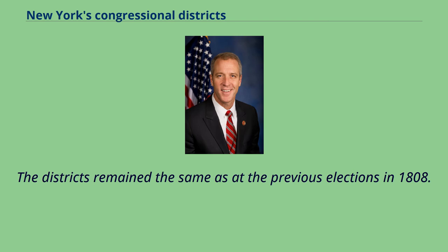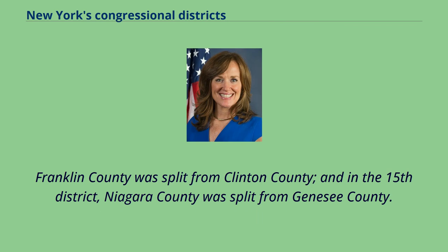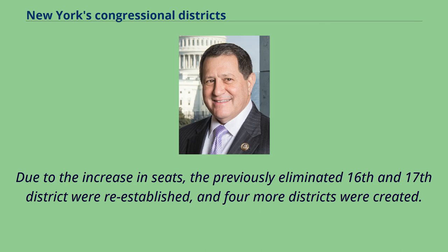The districts remained the same as at the previous elections in 1808. Only four new counties were created inside some districts: in the 5th district, Sullivan County was split from Ulster County; in the 7th district, Schenectady County was split from Albany County; in the 8th district, Franklin County was split from Clinton County; and in the 15th district, Niagara County was split from Genesee County. Due to the increase in seats, the previously eliminated 16th and 17th districts were re-established, and four more districts were created.